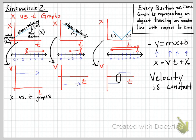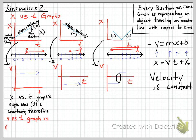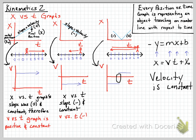So, position versus time graphs: the slope was positive and constant, so the velocity versus time graph ends up being positive and constant. The velocity versus time graph should match exactly what we see as the slope of the position versus time graph. Similarly, when the slope was negative and constant, the velocity versus time graph represents a constant negative line. A position versus time graph can be re-graphed as velocity versus time using its slope.